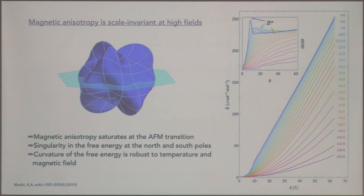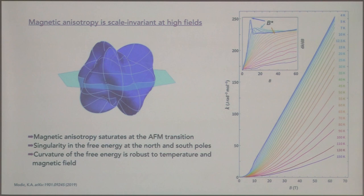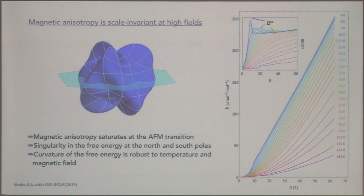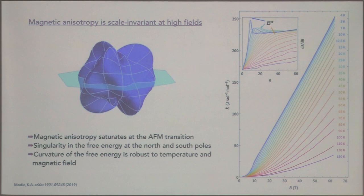Finally, with magnetic field applied in the honeycomb plane — which suppresses order at the lowest field, giving a large range of magnetic field to study — the AFM transition is at about 10 Tesla. Above that, you see a striking linear dependence all the way up to the highest fields we measured. As soon as you suppress the antiferromagnetic order, the system doesn't care about any intrinsic energy scale — what sets the behavior above that is just temperature and magnetic field. This is exactly the type of behavior you would expect from an independent gas of spins with G-factor anisotropy — the same temperature-field scaling behavior.